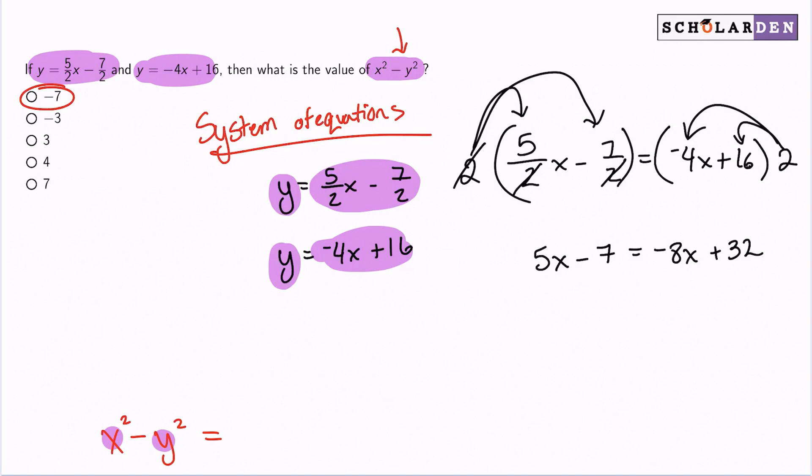So with that said, what we're going to do now is just solve for x. We'll add 8x to both sides, giving me 13x minus 7 equals 32. From there, I'll add 7 to both sides, giving me 39 on the right, canceling on the left, and 13x. From there, we'll divide 13 on both sides, allowing me to receive x equals 3.